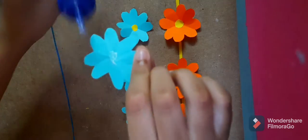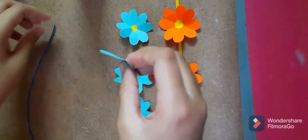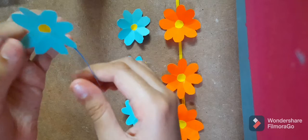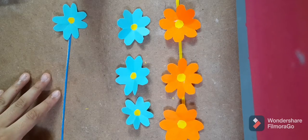When you get your strip, you're going to take one of the flowers and put glue on the back of your flower and stick it onto your strip. And you're going to repeat the step.